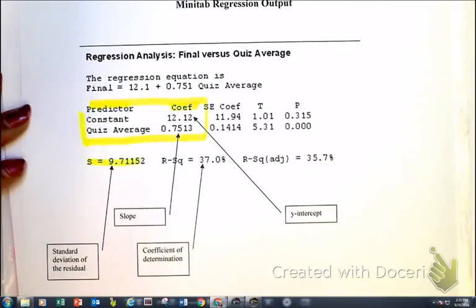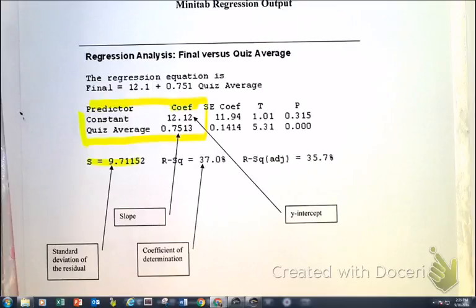Notice right here we've got the standard deviation of the residual, which tells us, given that least square regression line, how many, given your test scores, what typically your final exam score is going to be off by.